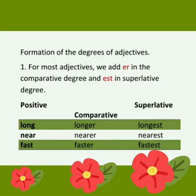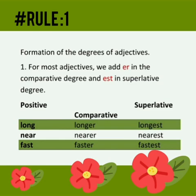So, let's see the rules for the formation of the degrees of adjectives. For most adjectives, we add ER in the comparative degree and EST in superlative degree. For example: long, longer, longest; near, nearer, nearest; fast, faster, fastest.